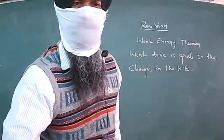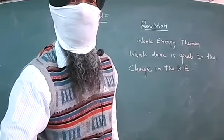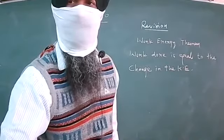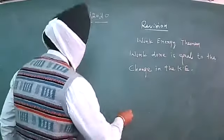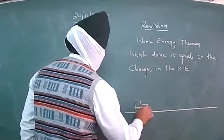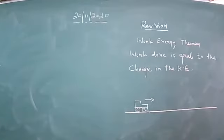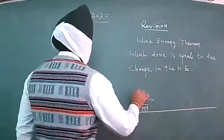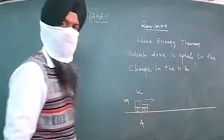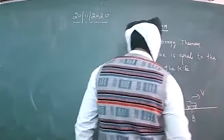In order to have the proof of this relationship, let us discuss this further. Consider a moving object on a horizontal surface. Imagine this object is moving with an initial velocity, small u. The mass is small m. This is point A, and the object is moving along this straight road reaching up to point B, where its velocity is v.